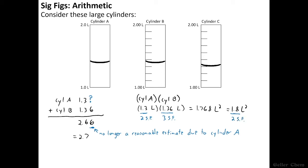I do want to quickly point out that it is a total coincidence that this answer here and this answer here have the same number of significant figures. At the end of the day, the rules for addition and subtraction are different than the rules for multiplication. There are definitely cases where adding two numbers versus multiplying two numbers will give different final numbers of sig figs as their answer. You just have to follow the rules appropriately.